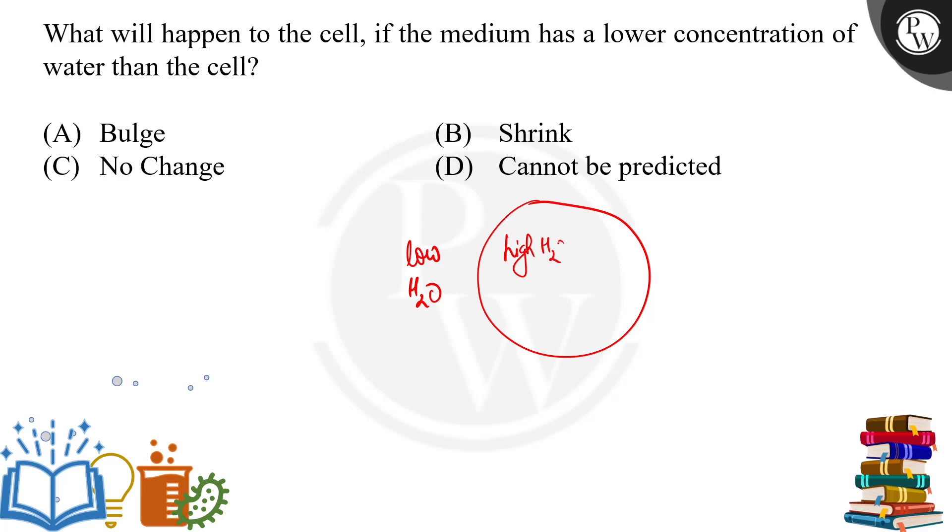To hume pata hai ki cell ka jo membrane hota hai, that is cell membrane, yeh kaisa hota hai? Semi-permeable hota hai. Semi-permeable ka kya matlab hai? It will allow solvent only. Solvent ko hi sirf kya allow karega.